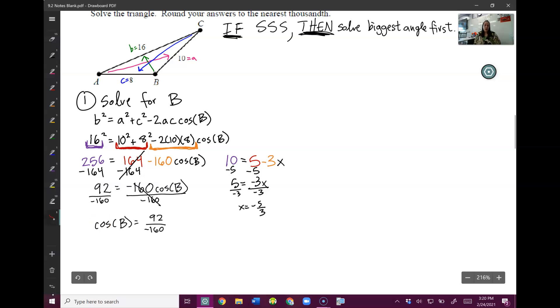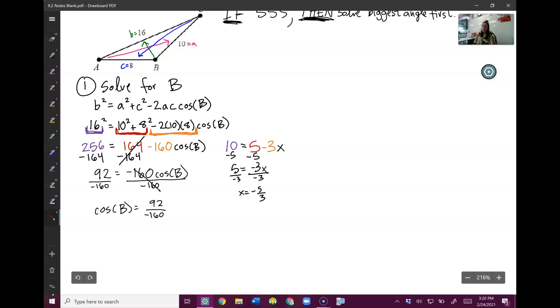So now I have cosine of capital B is 92 over negative 160. So now, how do I get rid of a cosine? Well, same way I get rid of the sine. I do the inverse cosine. Cosine and inverse cosine cancel each other out. So I get B, capital B is the inverse cosine of 92 over negative 160, which you type into your calculator.